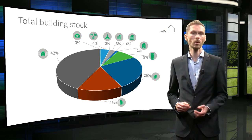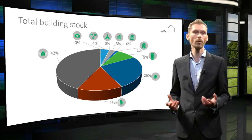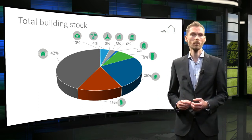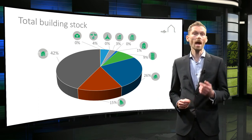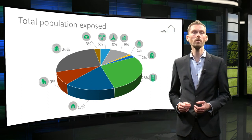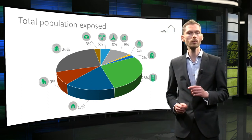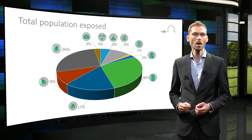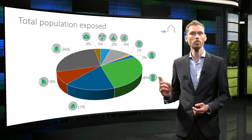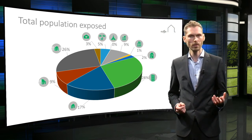Similar graphs, as presented in the Loppersum example, can subsequently be generated to create an overview of the vulnerability of the buildings for the region. As mentioned at the start of this lecture, the risk is not only related to the vulnerability of the buildings, but also to the exposure of the population within these buildings. By updating the graph to include the population, you can see that the percentages start to shift.